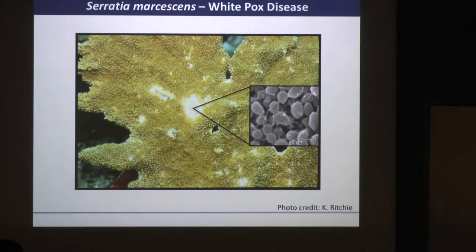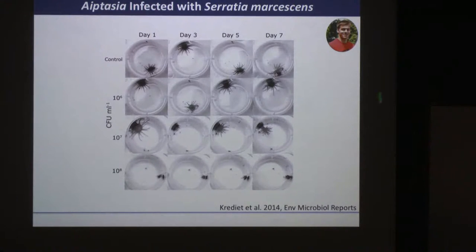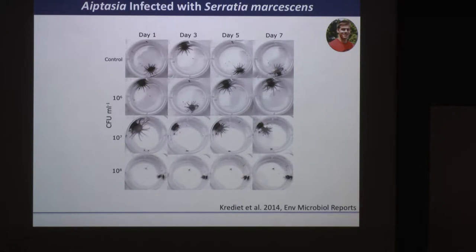Some of the first studies we did was to take this pathogen at similar doses known to be infectious to coral and simply put them on our sea anemones, asking whether they infect at a similar rate and whether we see the same type of disease progression. This was work done by an undergraduate intern at the time, Nick Gimbroni, who's now actually getting his PhD at USF Tampa campus — he switched away from corals to study cancer.